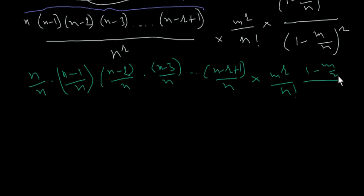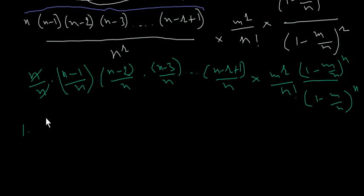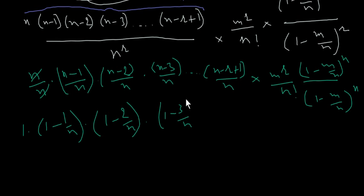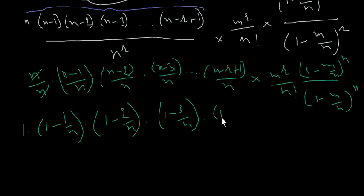We now open these terms by dividing each factor by n: n over n, then n minus 1 over n, then n minus 2 over n, then n minus 3 over n, and so on up to n minus r plus 1 over n. This gives us: 1, times 1 minus 1 over n, times 1 minus 2 over n, times 1 minus 3 over n, and so on, times 1 minus r plus 1 over n, multiplied by m to the power r over r factorial.